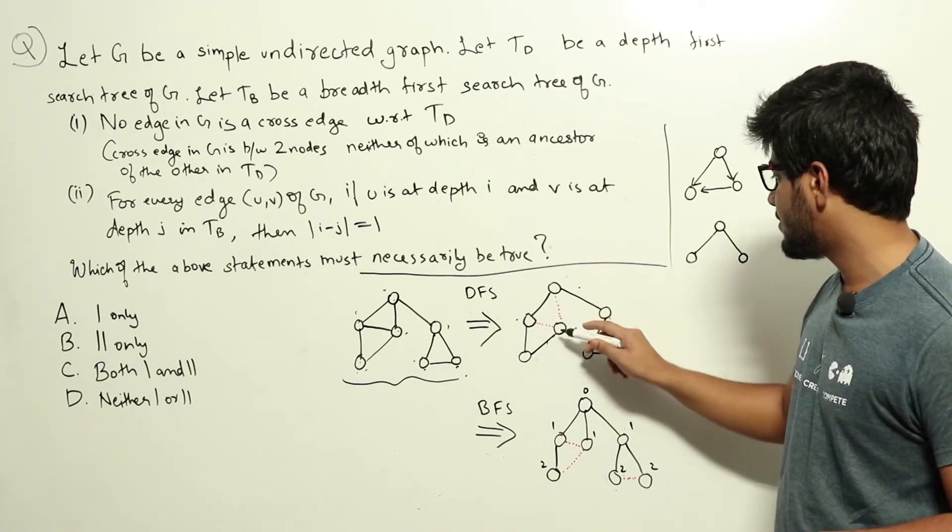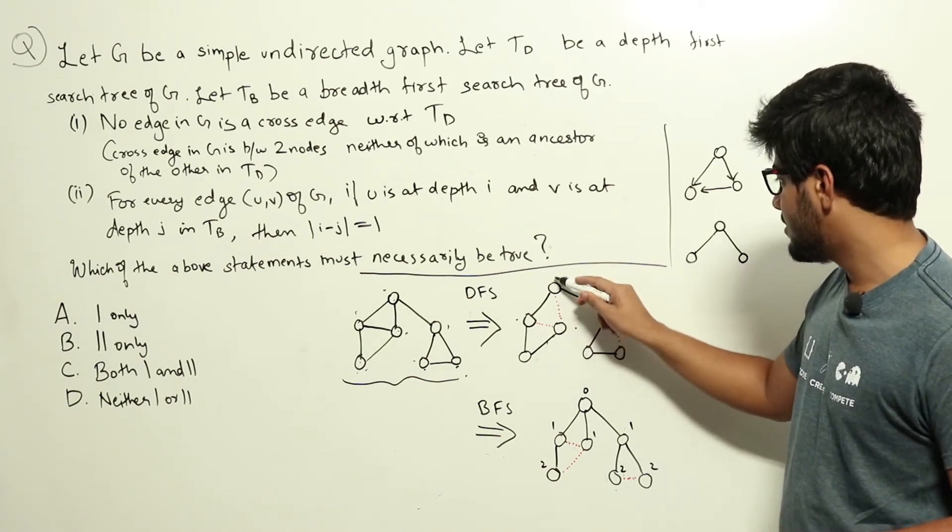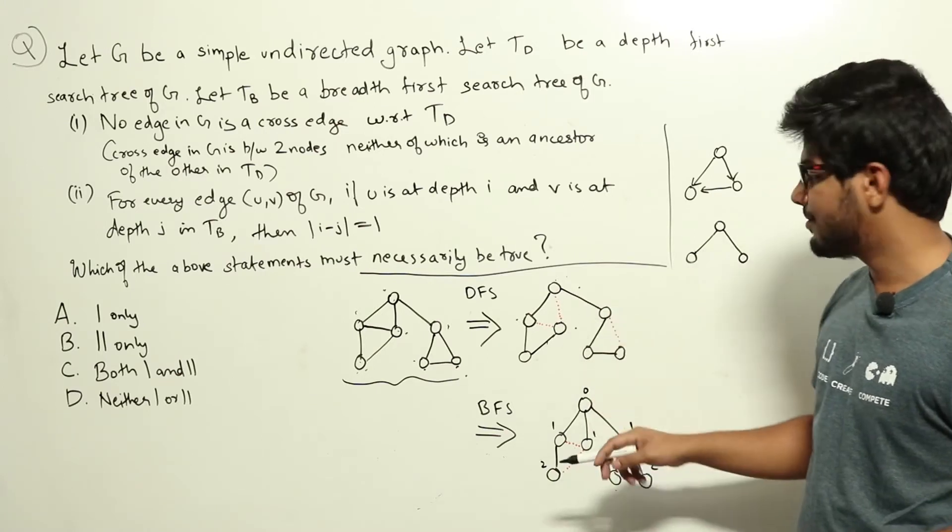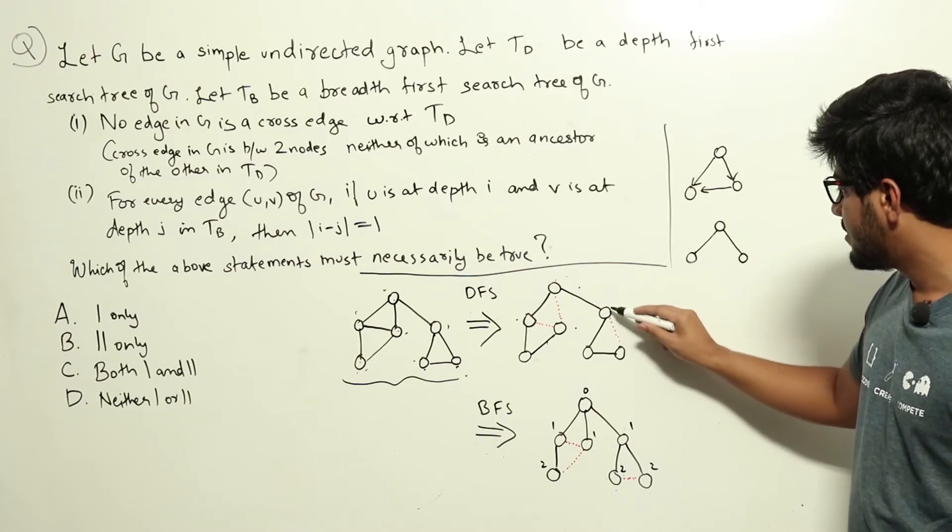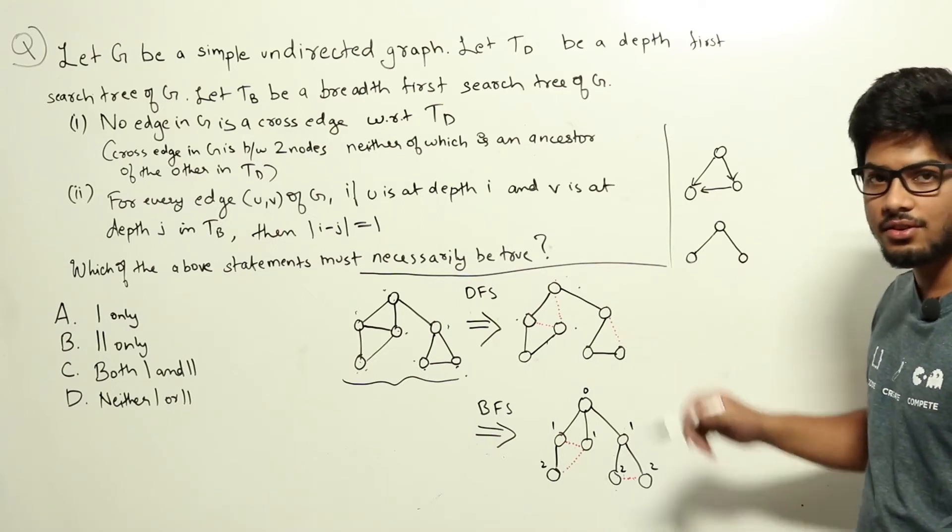Similarly, for this edge as well, this node is an ancestor of this node. So, this is also not a cross edge. Similarly, here as well, we have this edge. This node is a parent of this node. So, this is also not a cross edge.